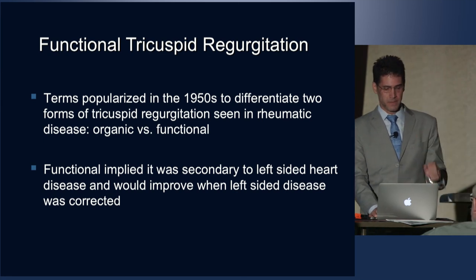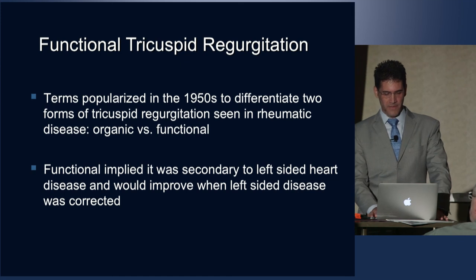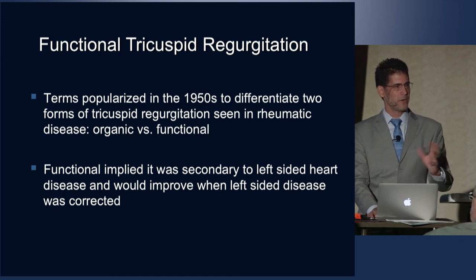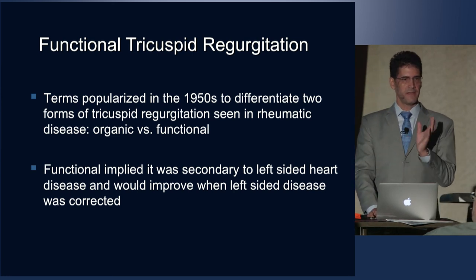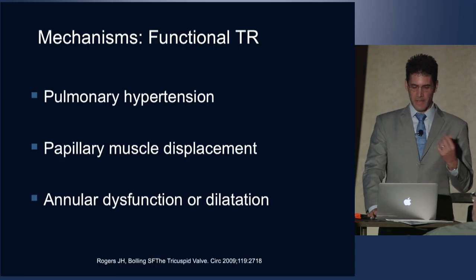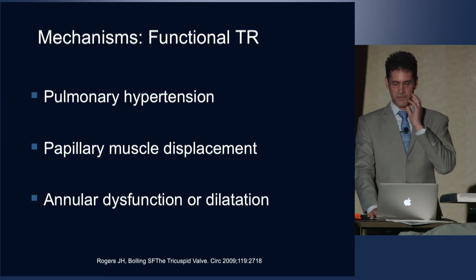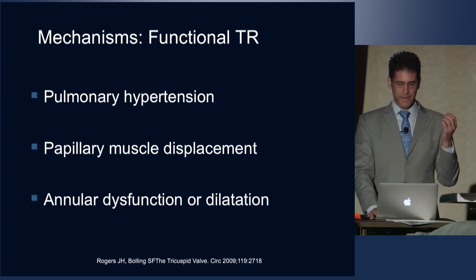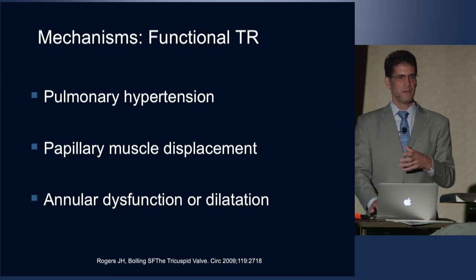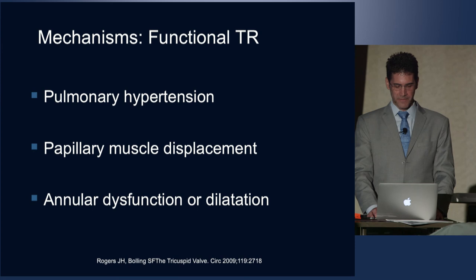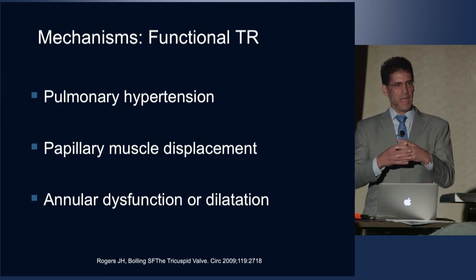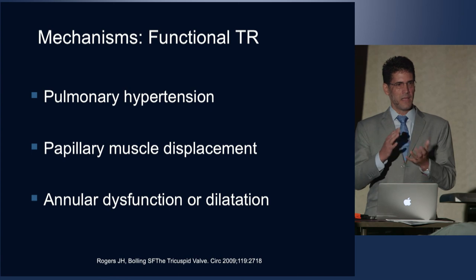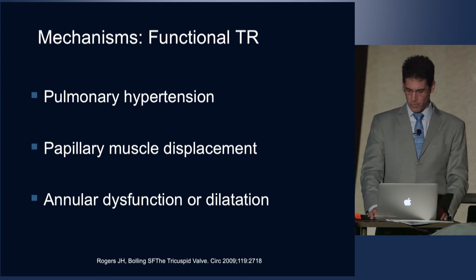Functional tricuspid regurgitation is a term popularized in the 1950s to differentiate primary from secondary disease. Functional implies it's secondary, most often to left-sided heart disease, and the thought was that once you fix the left-sided disease the tricuspid valve would fix itself. Mechanisms generating functional TR include pulmonary hypertension — the higher the pressures the right ventricle pumps against, the more the valve may dilate — papillary muscle displacement from right ventricular enlargement, and annular dilatation as the RV dilates and pulls the annulus with it.